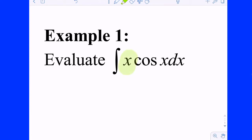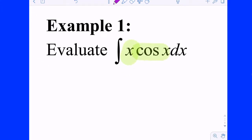We notice that we have a power function, a polynomial factor, and a trig function on the other — sine, cosine, exponential typically are there. I know how to take the derivative of and integrate x. I know how to take the derivative and integrate cosine. Which one do you want to call U — which one do you want to take the derivative of? If you have a power factor, a power function, x to some power, call it U.